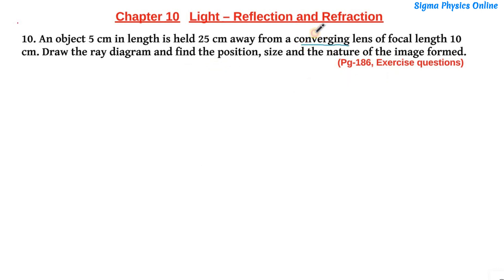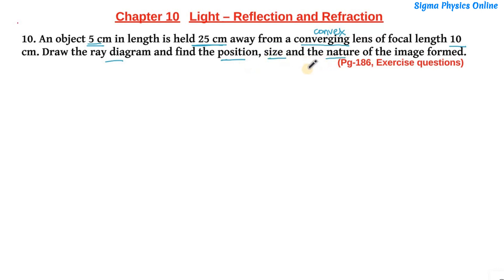Here we have a converging lens, that is a convex lens. A convex lens is also known as a converging lens. The focal length is given, and there is an object placed 25 centimeter away from this convex lens with a height of 5 centimeter. We have to draw the ray diagram and find the image distance, image height, and the nature of the image formed.